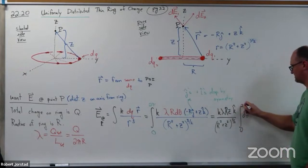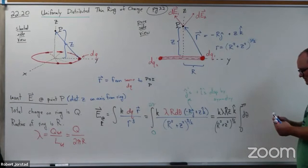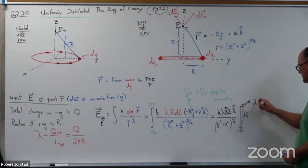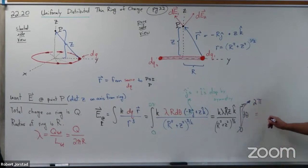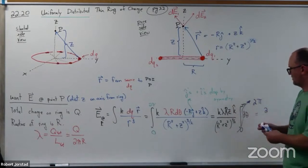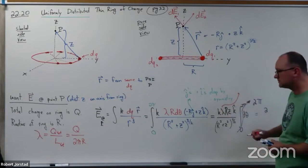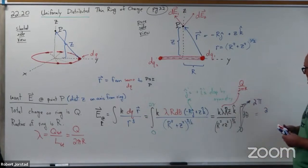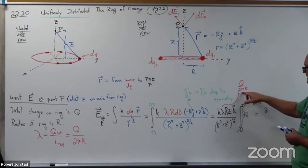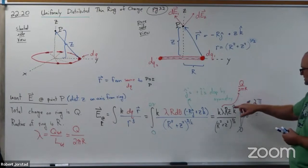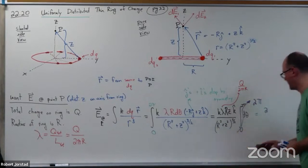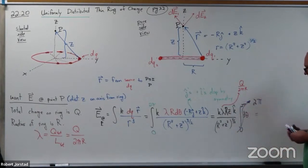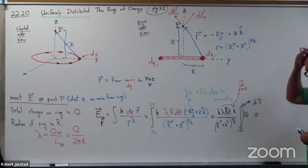We integrate from 0 to 2π. This whole term evaluates to just 2π — theta evaluated from 0 to 2π. So our final answer involves a factor of 2π. Now we should also plug in lambda = Q/(2πR), so the 2π cancels the 2π, and R cancels R. Let's do the algebra — pause the video and check with me.